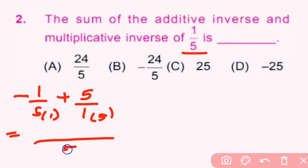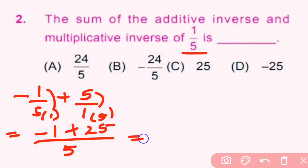The common denominator is 5. So −1×1 = −1 and 5×5 = 25. Then −1 + 25 = 24, giving us 24/5. So option A is the correct answer.